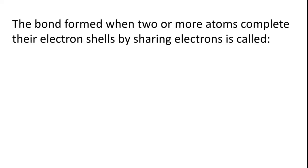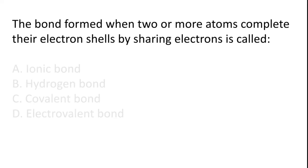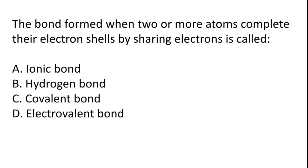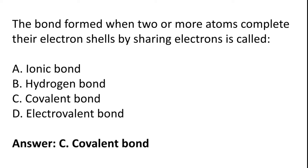The bond formed when two or more atoms complete their electron shells by sharing electrons is called: Ionic bond, Hydrogen bond, Covalent bond, Electrovalent bond. So the correct answer is option C, Covalent bond.